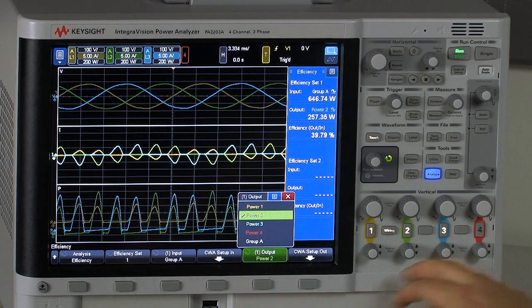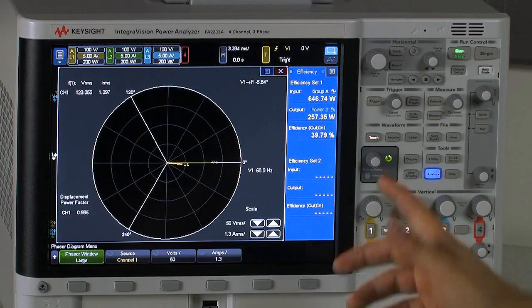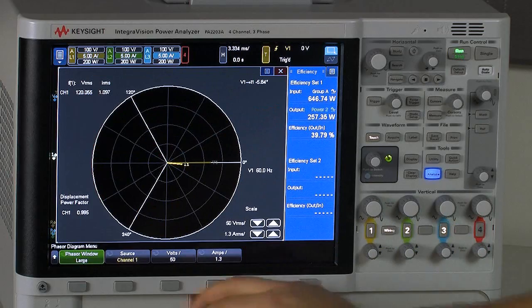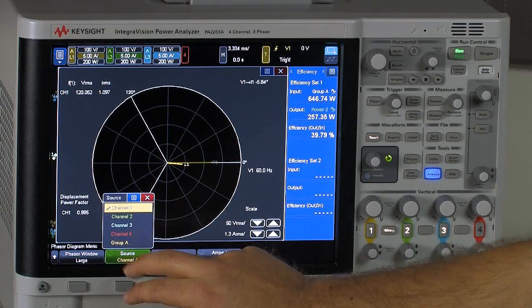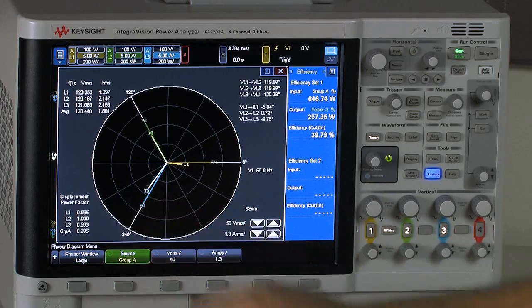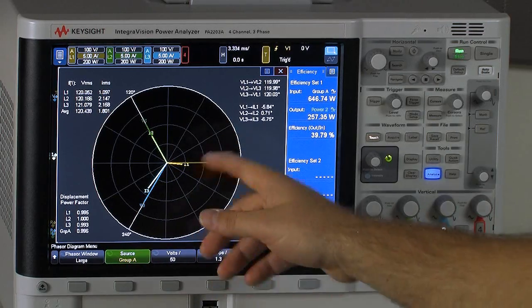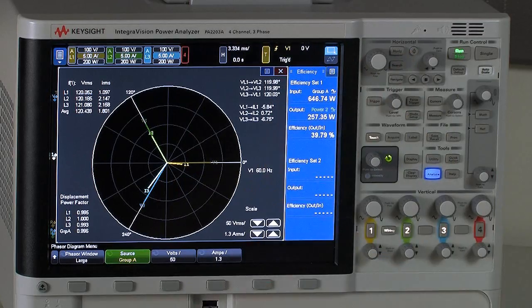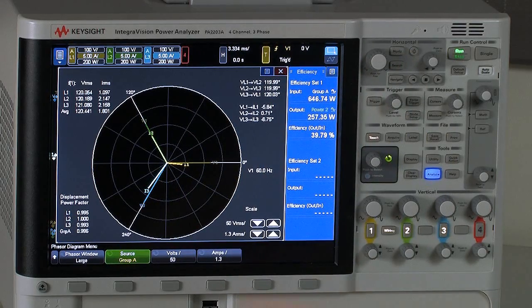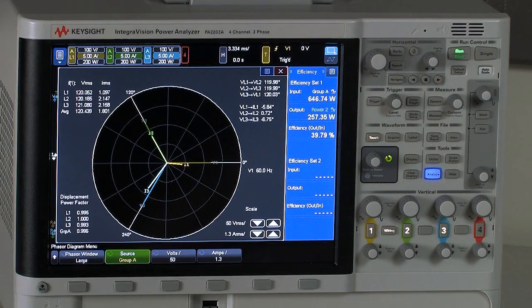And then I think finally, another very important feature would again be our phasor diagram feature where again I choose the source, I go to group A, it brings it up, we can see we sort of have the three phases, the currents are in pretty close alignment here, but again all I have to do is select that group measurement and my phasor diagram is ready to go.